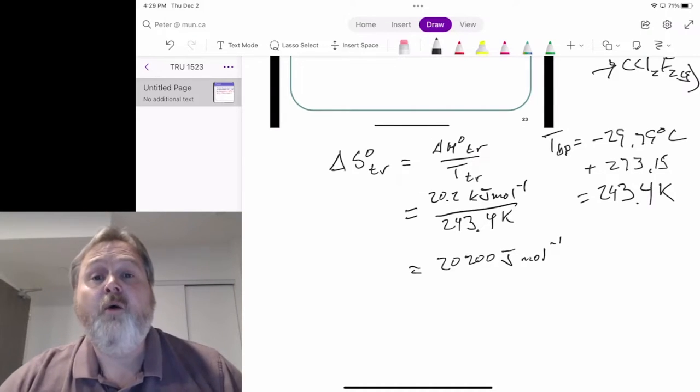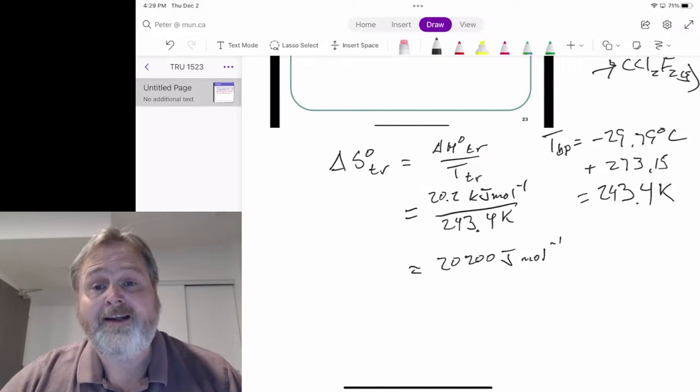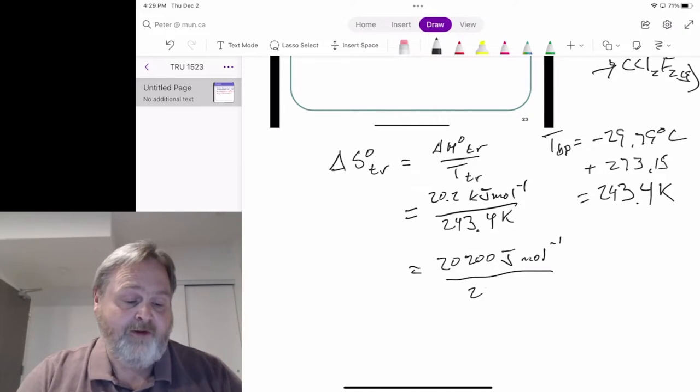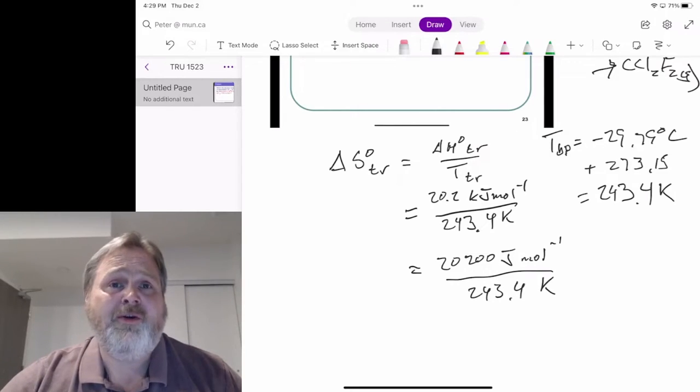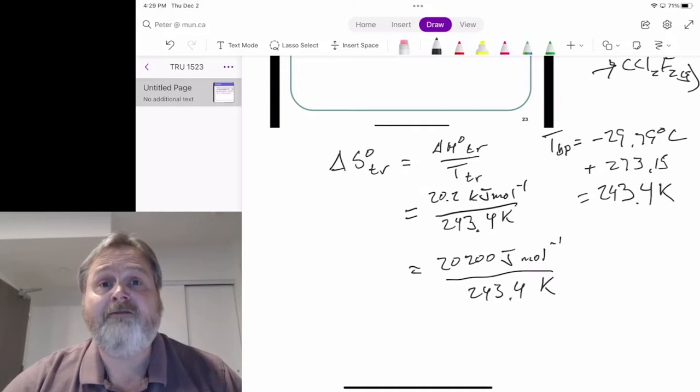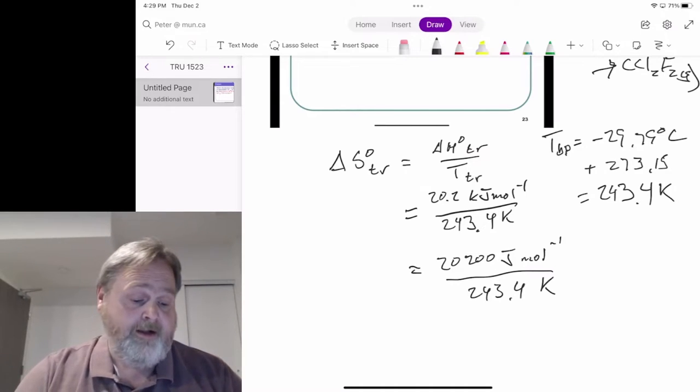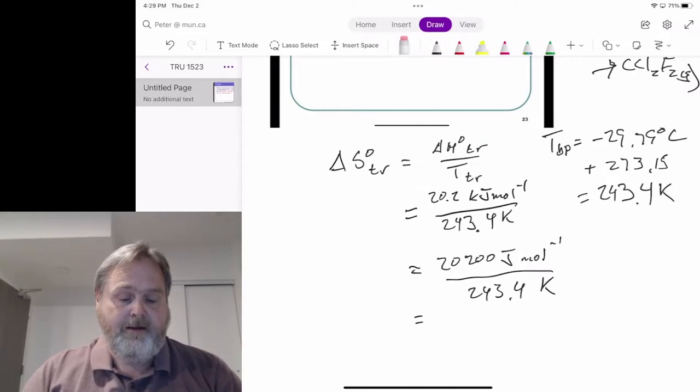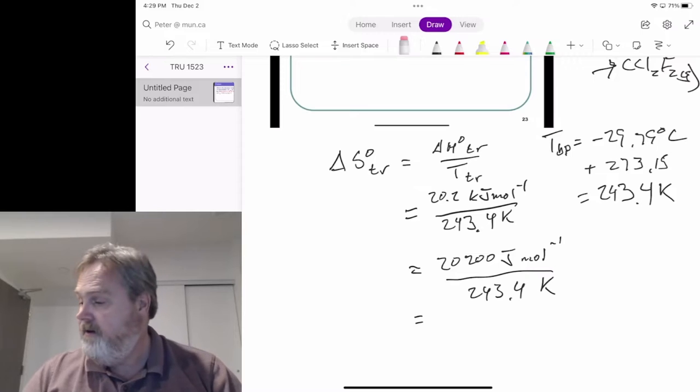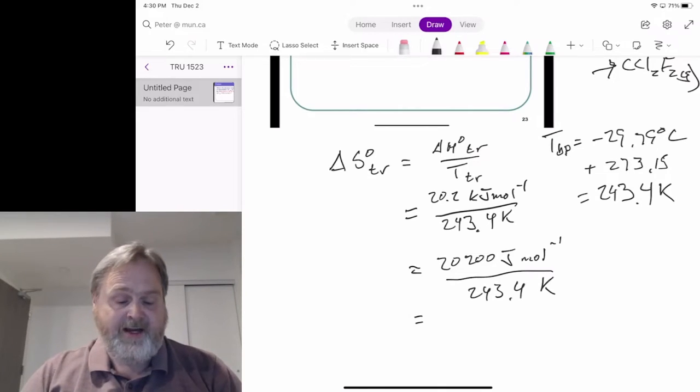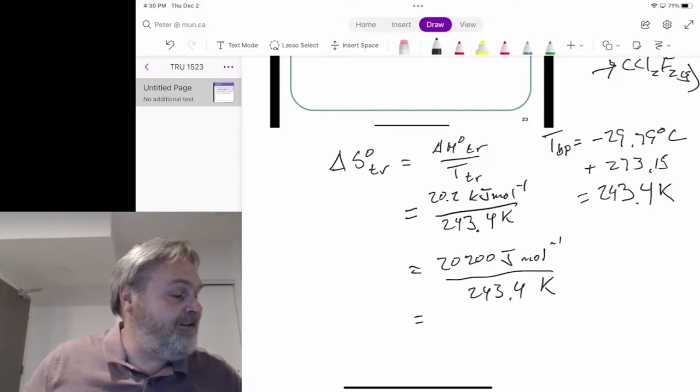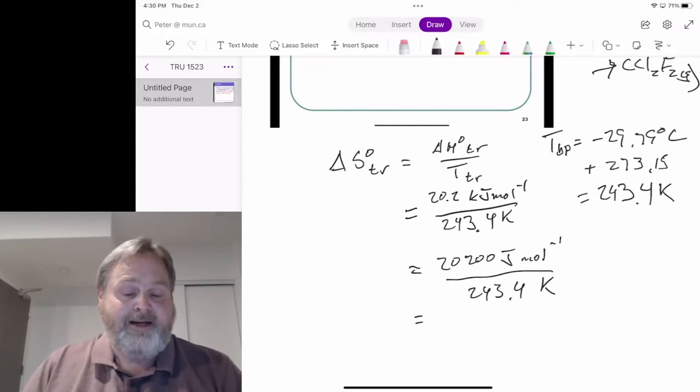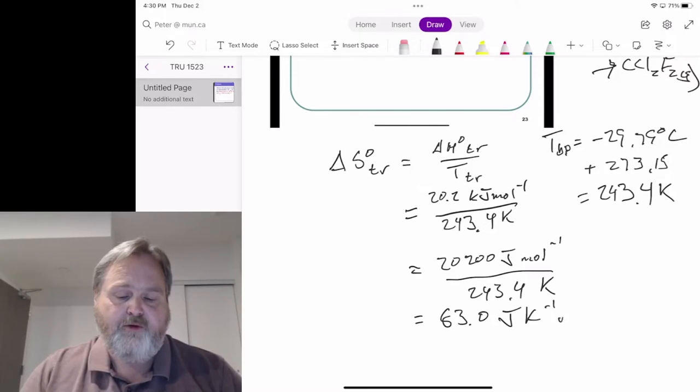Once you do the conversion of 1000 joules per kilojoule, divided by 243.4 Kelvin. We did this because entropy units are usually given in joules per Kelvin per mole. When we do the math, we find that the entropy change for this phase transition is 83.0 joules per Kelvin per mole.